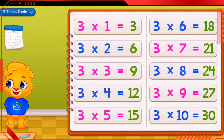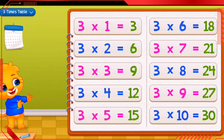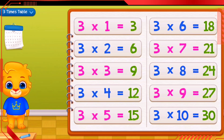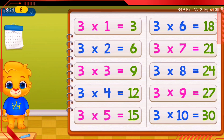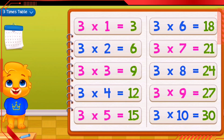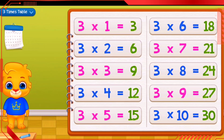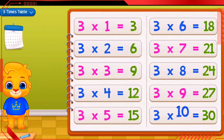3 times 7 equals 21. 3 times 8 equals 24. 3 times 9 equals 27. 3 times 10 equals 30.